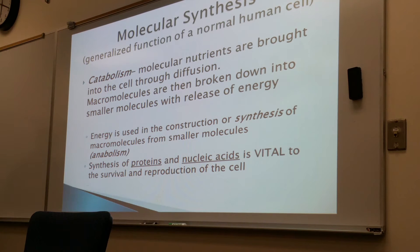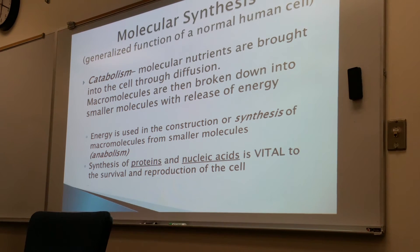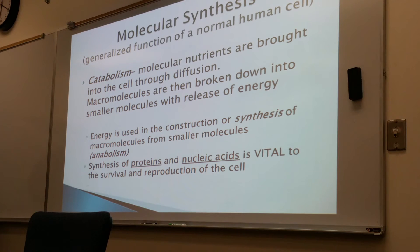There's a cycle going on: there's a breakdown, a production or synthesis. When things break down, energy is released, and that energy is used to synthesize more proteins. When producing macromolecules from small molecules, it's called anabolism. Synthesis of proteins and nucleic acids is vital to the survival and reproduction of the cell. We need both proteins and nucleic acids to survive.